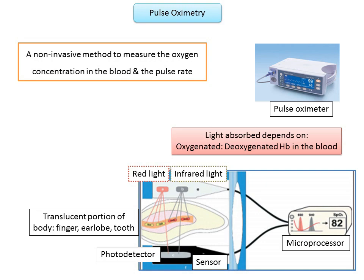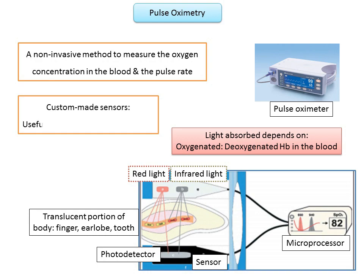The transmission of light to the sensor requires that there be no obstruction from restorations, which can sometimes limit the usefulness of pulse oximetry to test pulp vitality. Hence, custom-made sensors have been developed which are found to be more accurate than electric and thermal pulp tests. This sensor has been especially useful in evaluating teeth subjected to traumatic injuries, as such teeth tend to present with questionable vitality using conventional pulp testing methods.